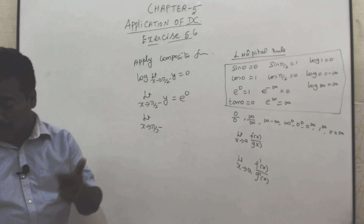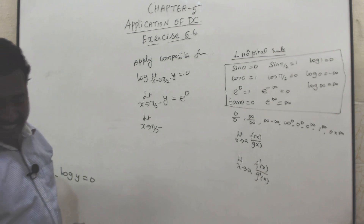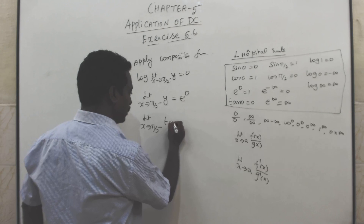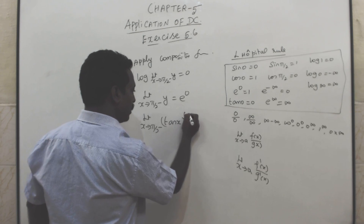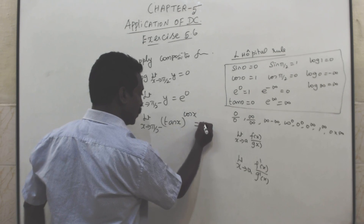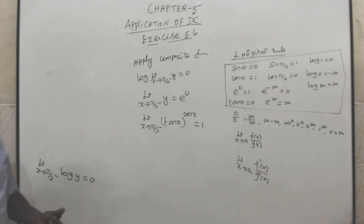What is y? That is the problem — y is tan x to the power cos x. So limit x tends to π/2 minus of tan x power cos x equals 1. Is it clear?